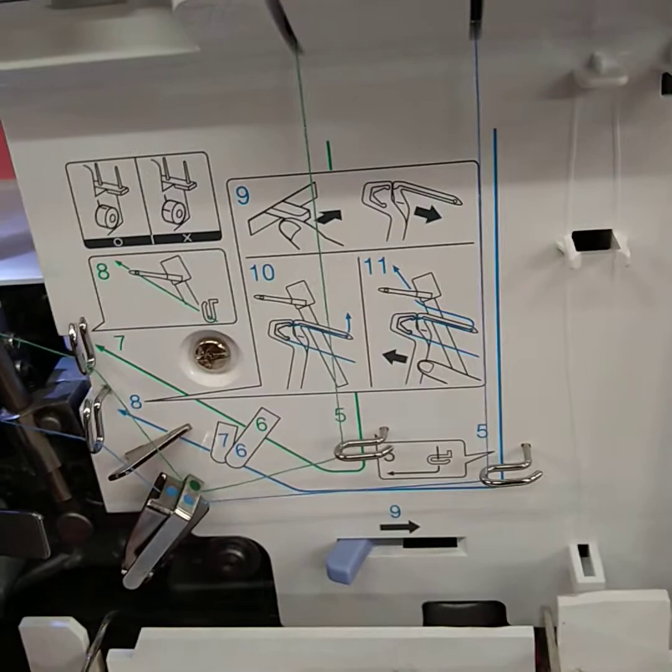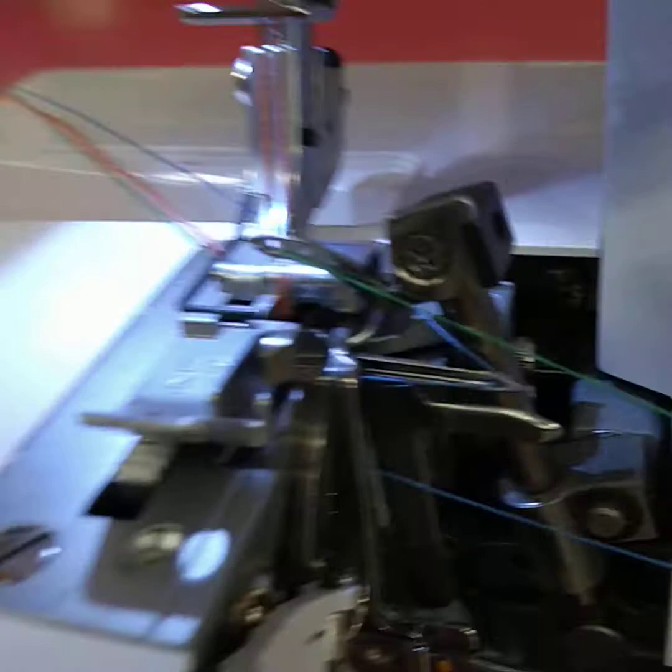As described in the previous video, we can't operate this machine, not even by hand, unless the presser foot is down. We lower the presser foot and the same as the sewing machine, we're going to turn the hand wheel towards ourselves and we can watch the operation.